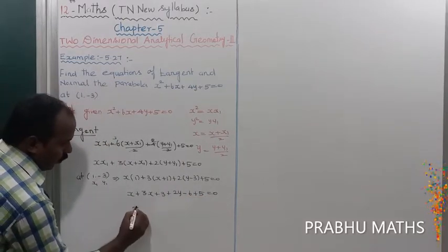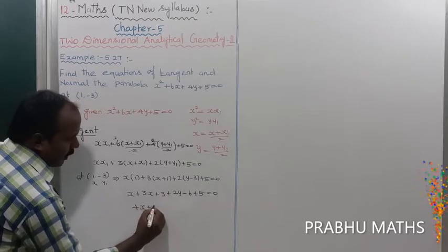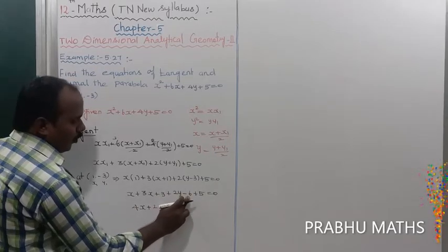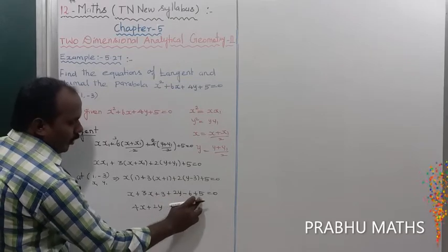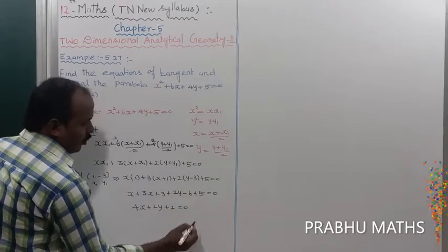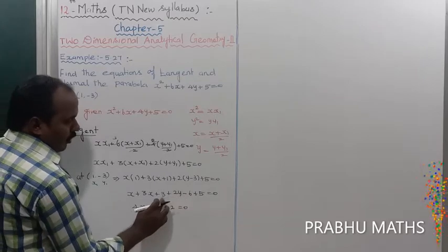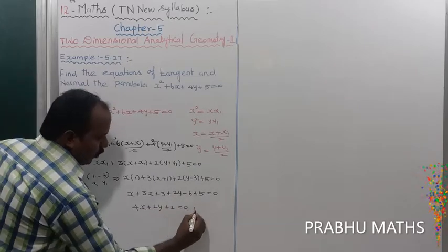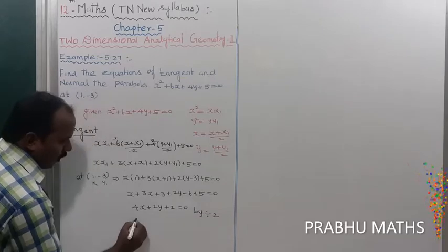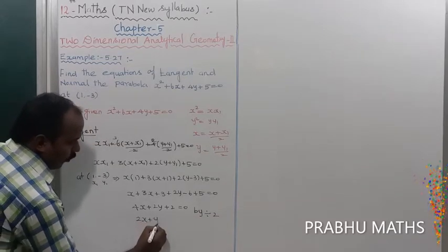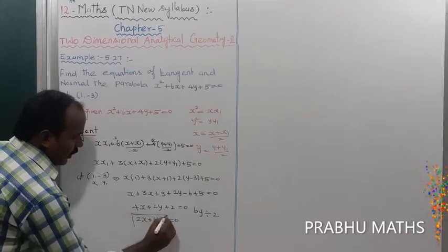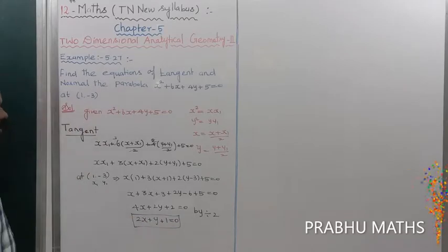Combining terms: 4x + 2y + 2 = 0. Dividing through by 2: 2x + y + 1 = 0. That is the tangent equation.